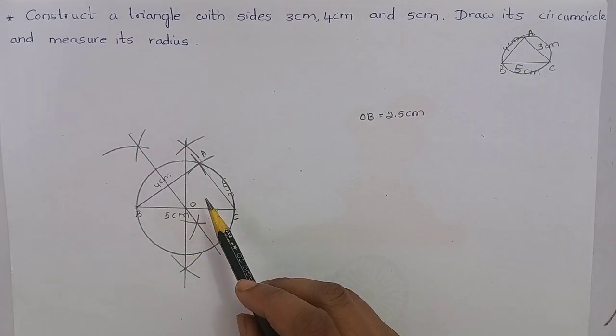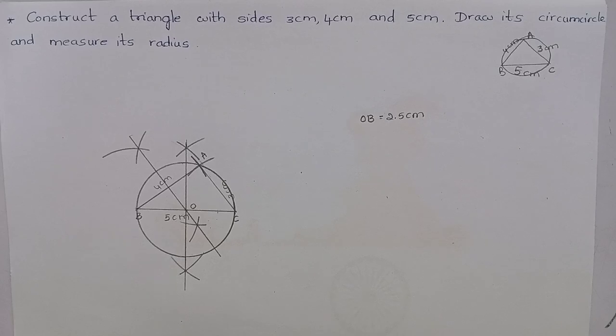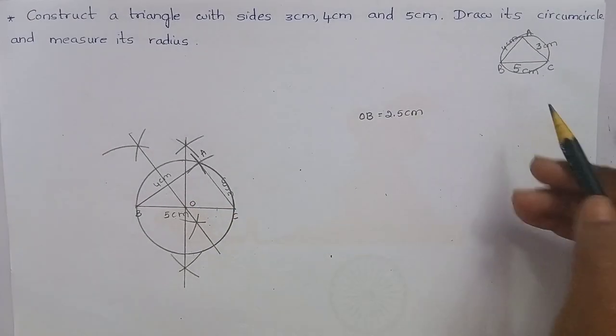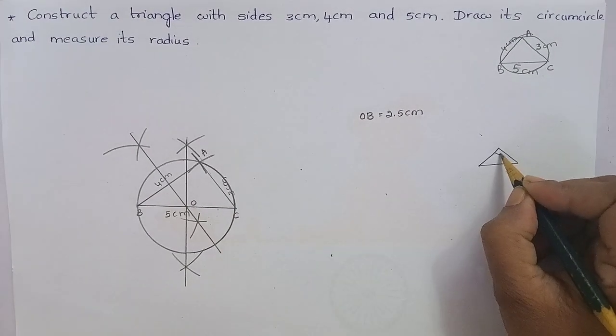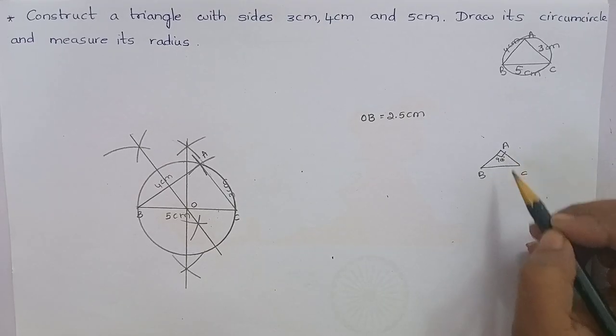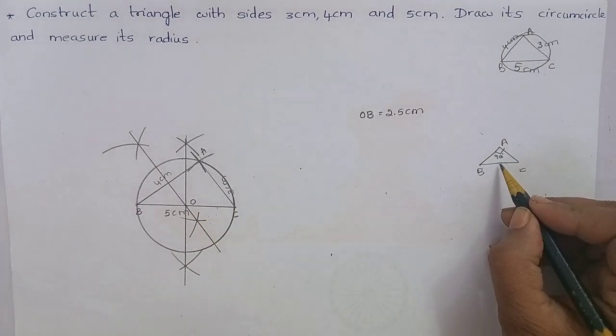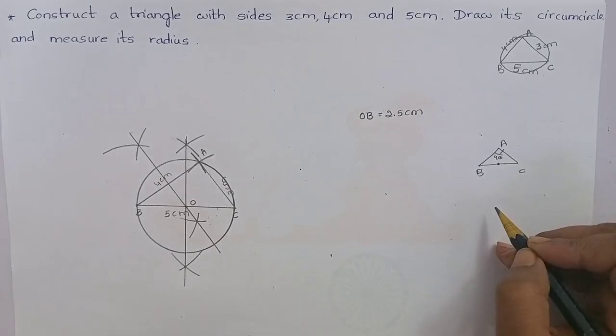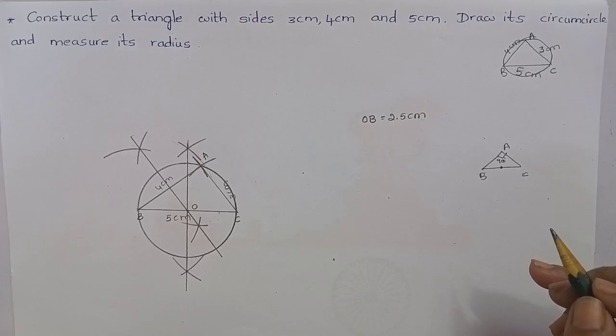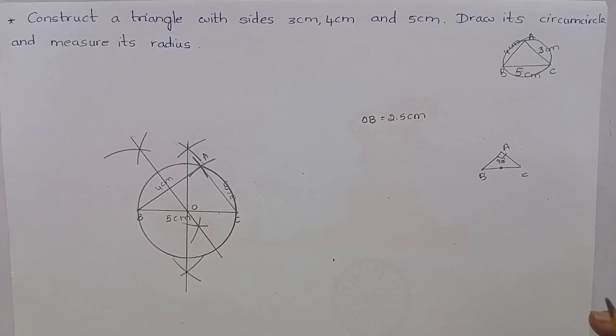See here, it is a right-angled triangle because we know that 5, 4, 3 are the Pythagorean triplets. This means it is a right-angled triangle and 90 degrees is at A. And BC is the hypotenuse. So, the circumcenter is on the middle point of the hypotenuse. And we know that in a right-angled triangle, the circumcenter is at the midpoint of a hypotenuse. Hope you have understood. Thank you.